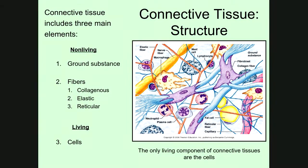The only living component of connective tissues is the cells, which are interspersed throughout. Looking at these different cells, you'll notice they are different shapes and different sizes because they are different kinds of cells. Some connective tissues have many different kinds of cells within them. Other connective tissues, such as fat — which is a connective tissue — have predominantly just a single cell type.